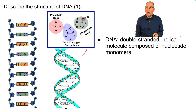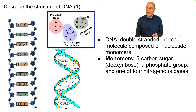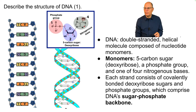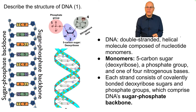The monomers are nucleotides. They consist of a five-carbon sugar called deoxyribose — hence deoxyribonucleic acid — a phosphate group, and one of four nitrogenous bases. The nitrogenous base can vary. Each strand consists of covalently bonded deoxyribose sugars and phosphate groups, which comprise DNA's sugar-phosphate backbone.